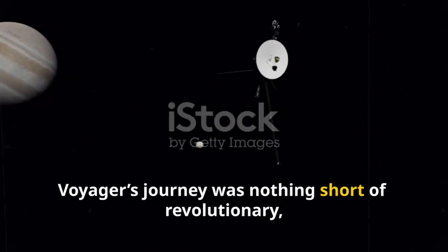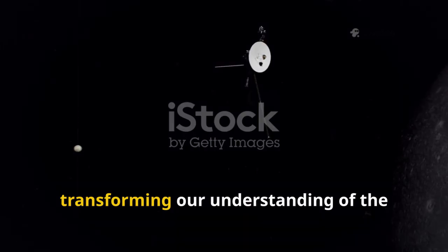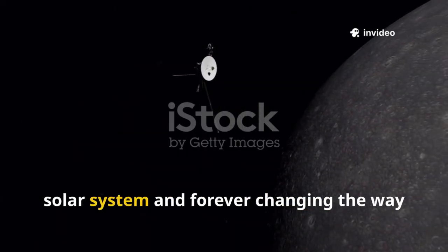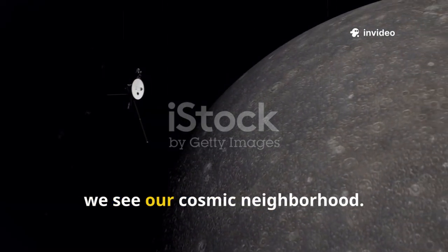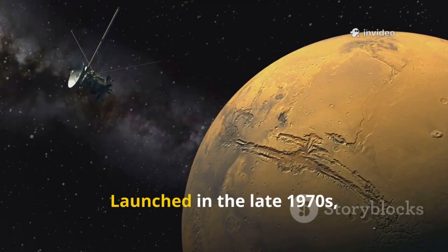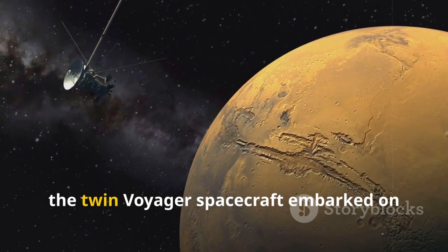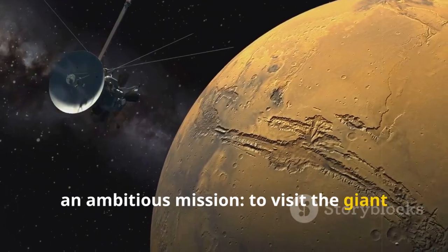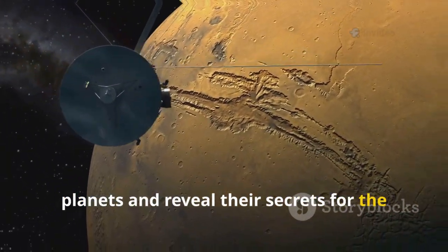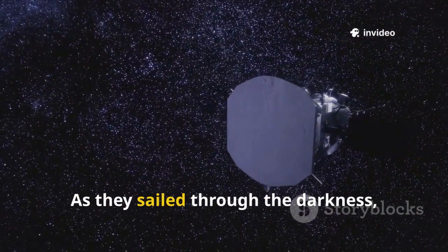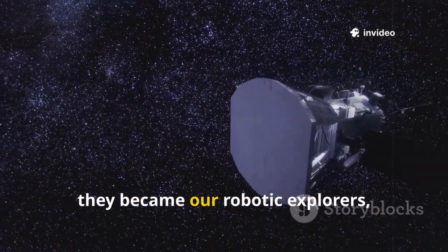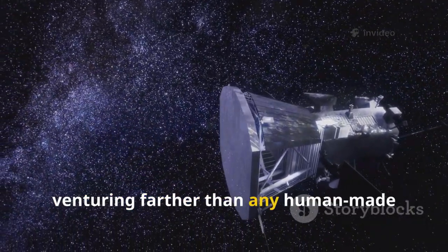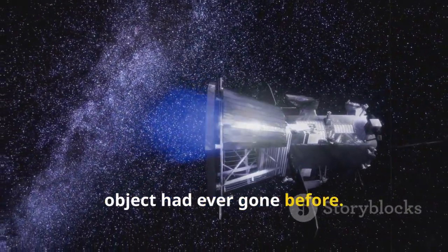Voyager's journey was nothing short of revolutionary, transforming our understanding of the solar system and forever changing the way we see our cosmic neighborhood. Launched in the late 1970s, the twin Voyager spacecraft embarked on an ambitious mission to visit the giant planets and reveal their secrets for the very first time. As they sailed through the darkness, they became our robotic explorers, venturing farther than any human-made object had ever gone before.